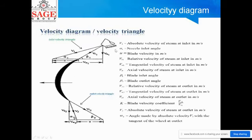Velocity diagram: Steam from the nozzle strikes the blade at velocity V1. V1 is the absolute velocity of steam striking the blade. Vr1 is the relative velocity of steam at the inlet, and U1 is the velocity of the blade. Vw1 is the whirl component and alpha1 is the nozzle angle at inlet. At the outlet, Vr2 is the relative velocity of steam after passing through the blade, V2 is the absolute velocity, and U is the same blade velocity. These are the main velocity components used in the velocity diagram of a steam turbine.